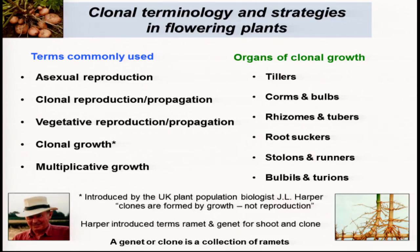There is an incredible diversity of clonal strategies, and I'm not sure any other group of organisms has so many different mechanisms of asexual reproduction. These are all different kinds of strategies that plants have evolved: tillers, corms, bulbs, rhizomes, tubers, root suckers, stolons, runners, bulbils, and turions — all different ways that plants can grow and propagate.